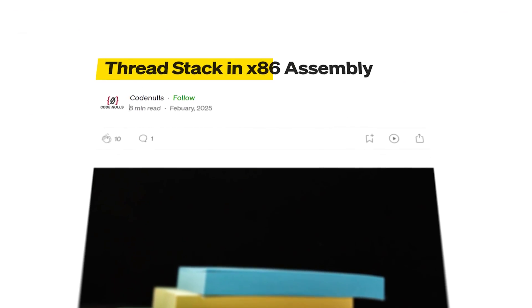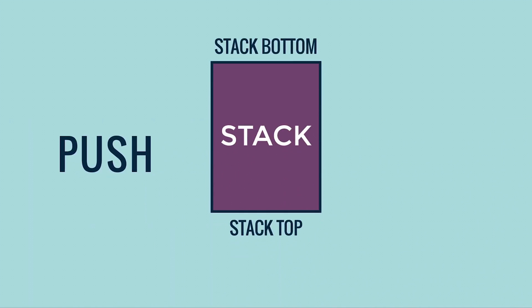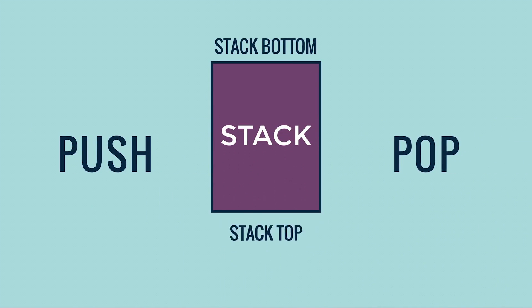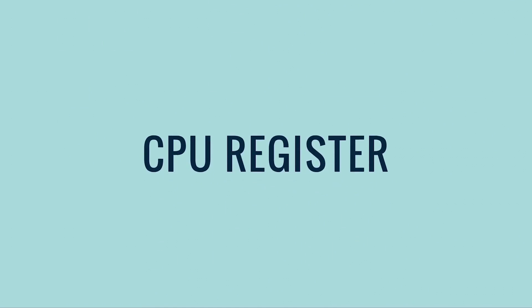Hey, it's Dyanesh. In this tutorial, we will learn how thread stack works in assembly. In assembly, the push instruction is used to push four bytes of data on top of the memory stack, and the pop instruction is used to pop four bytes of data from the top of the memory stack, and these four bytes are stored within a CPU register. When we have some data in a CPU register like EAX which we want to keep for later use, but we also need to perform other operations using the same register, we use the push instruction to store its data on the stack.